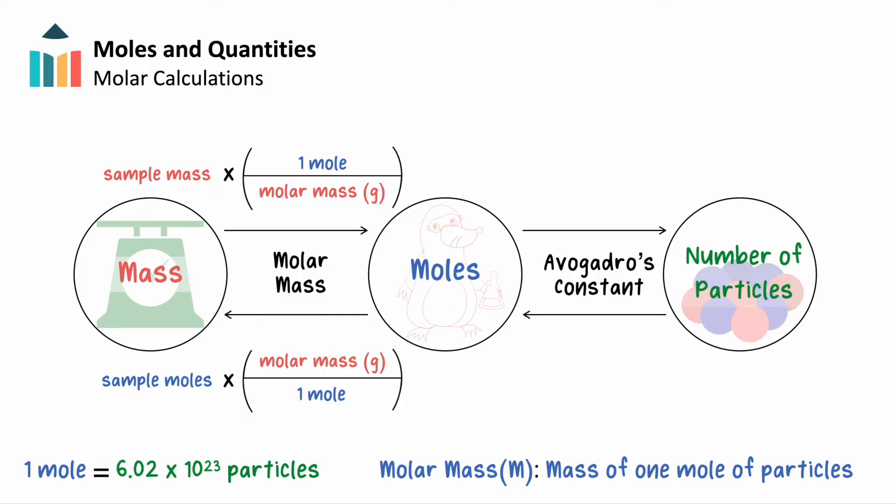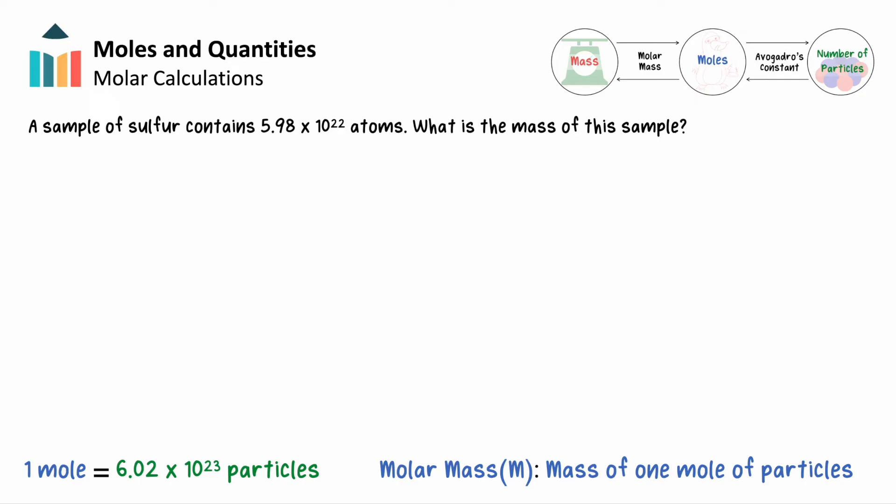Let's try our hands at a bit more complicated of a calculation. A sample of sulfur contains 5.98 times 10 to the 22nd atoms. What is the mass of this sample?